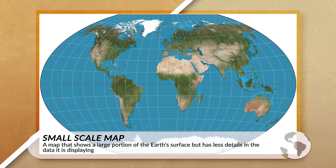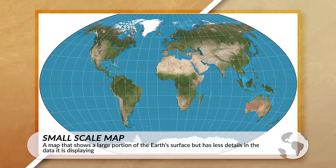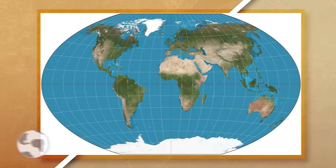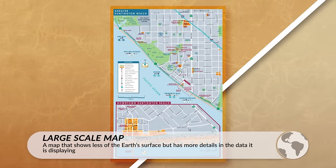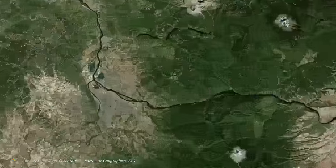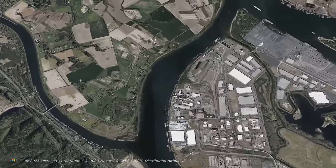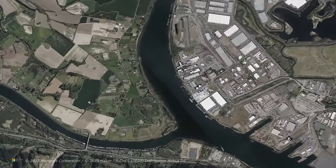As we change our scale from global to local, we are able to get more details in the information. Small scale maps are more zoomed out and use more generalizations to present data, while large scale maps are zoomed in, have more details, and use fewer generalizations. Students often get confused with small and large scale maps — remember, small scale maps are zoomed out and large scale maps are zoomed in. Whenever we change our scale, we can observe different spatial associations, patterns, and gain insight into different geographic areas.